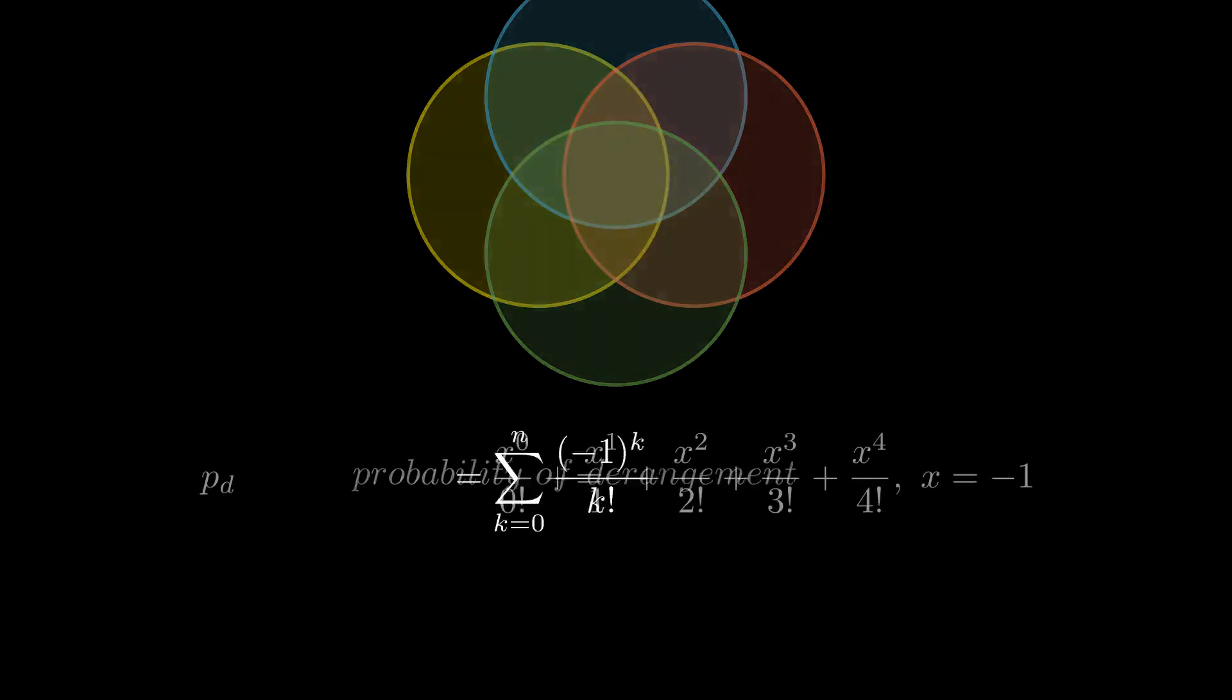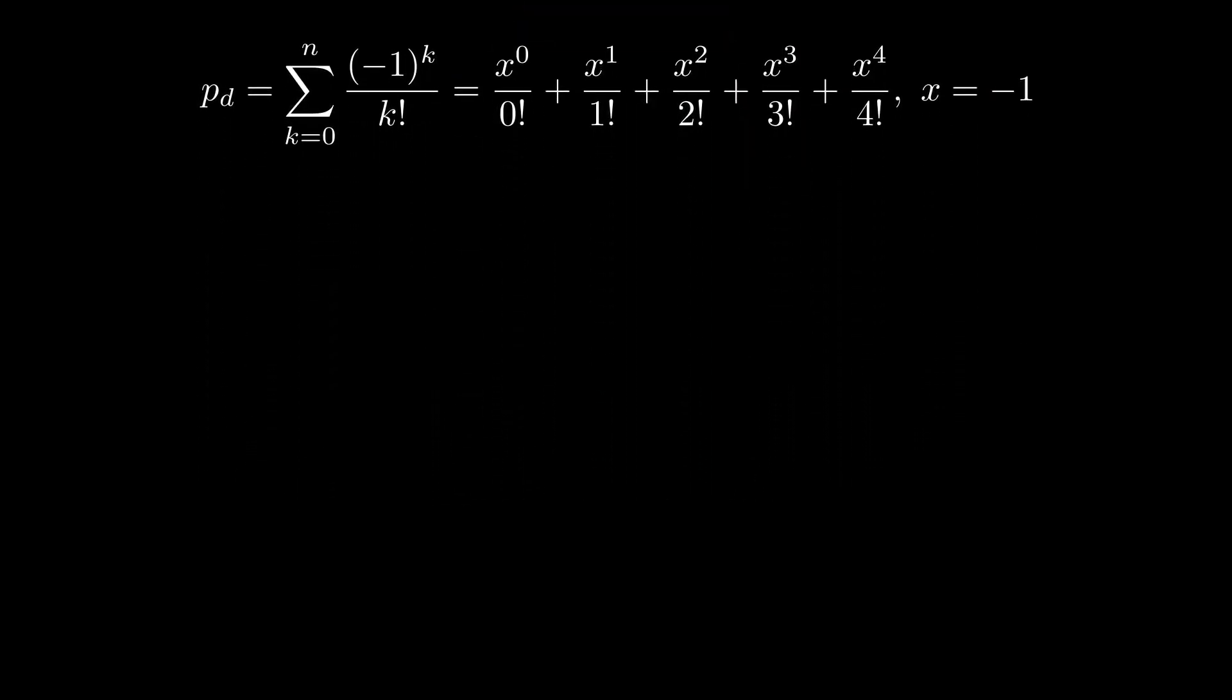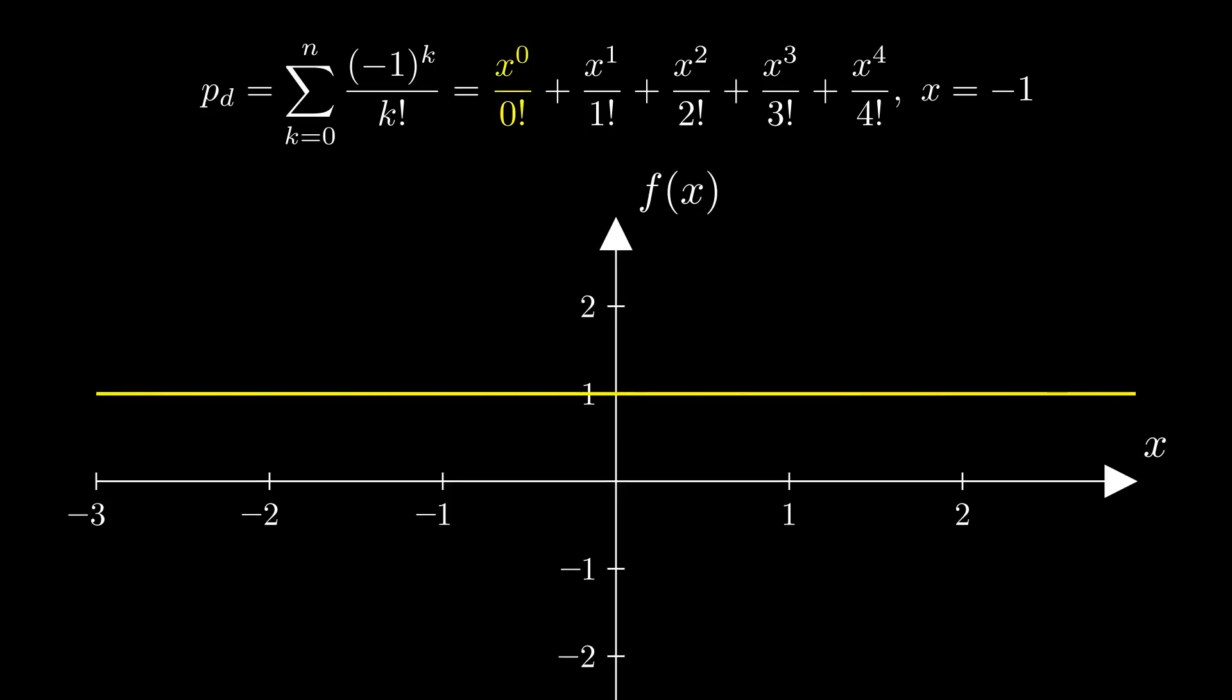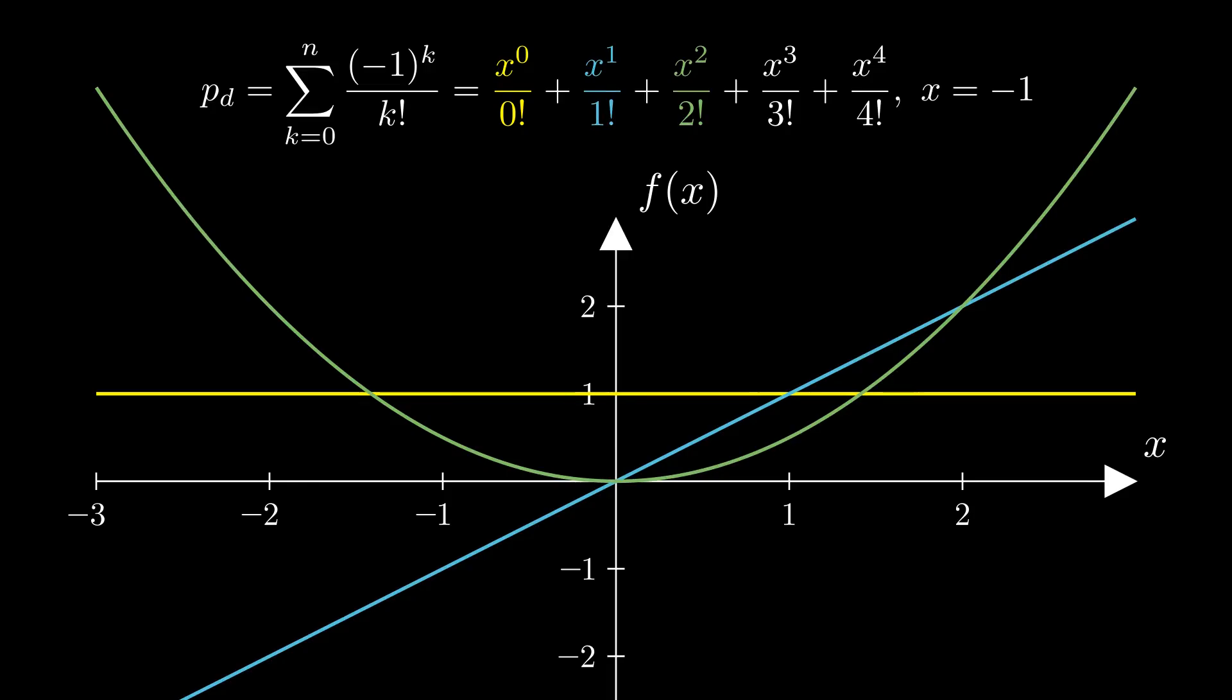A fun thing to do now is to simply open up the sum again and explicitly look at the individual terms we ended up with. We'll set the minus 1 aside and plot the functions as dependent on x. The first term is just a boring line, while the consecutive terms start being more complex, representing different powers of x. We can sum them all up and plot the resulting function.